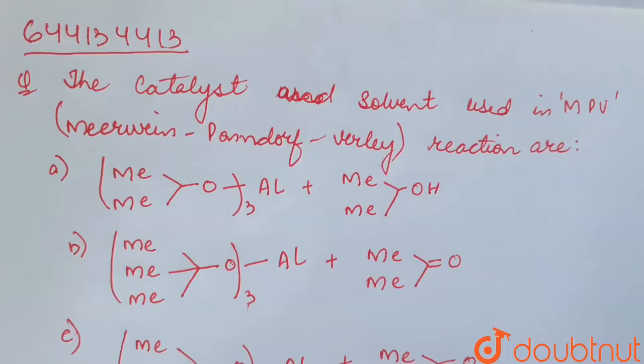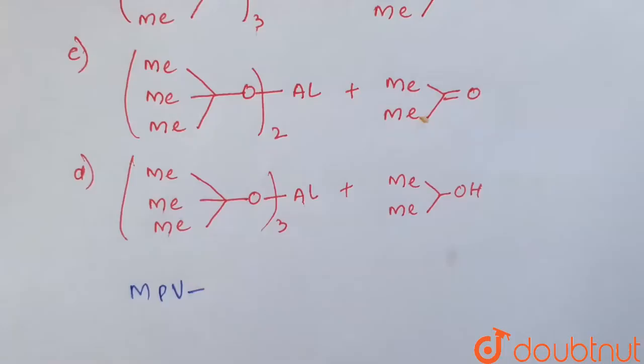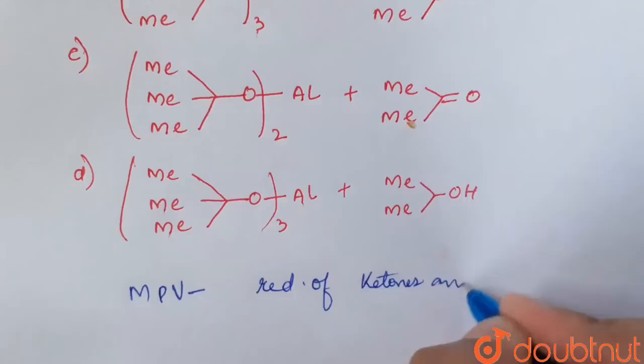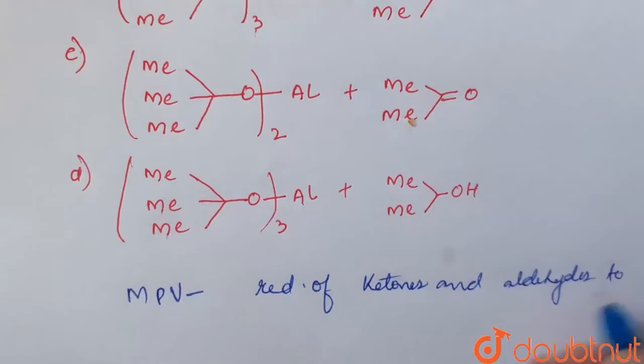MPV reaction, that is Meerwein-Ponndorf-Verley reaction, they are reduction of ketone, reduction of ketones, ketone and aldehyde and aldehyde to their corresponding alcohol.